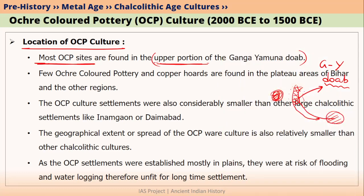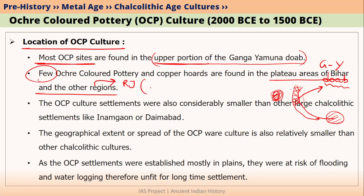Most OCP sites are located in the upper portion of Ganga Yamuna Doab. However, a few OCP sites were also located in the plateaus of Bihar, as well as in Rajasthan — mainly in the Ganeshwar Jodhpura culture region. Moreover, in most of these regions, we have also found Copper Hoards along with the Ochre Coloured Pottery, and that is why we tried to link the Copper Hoards with OCP culture people.